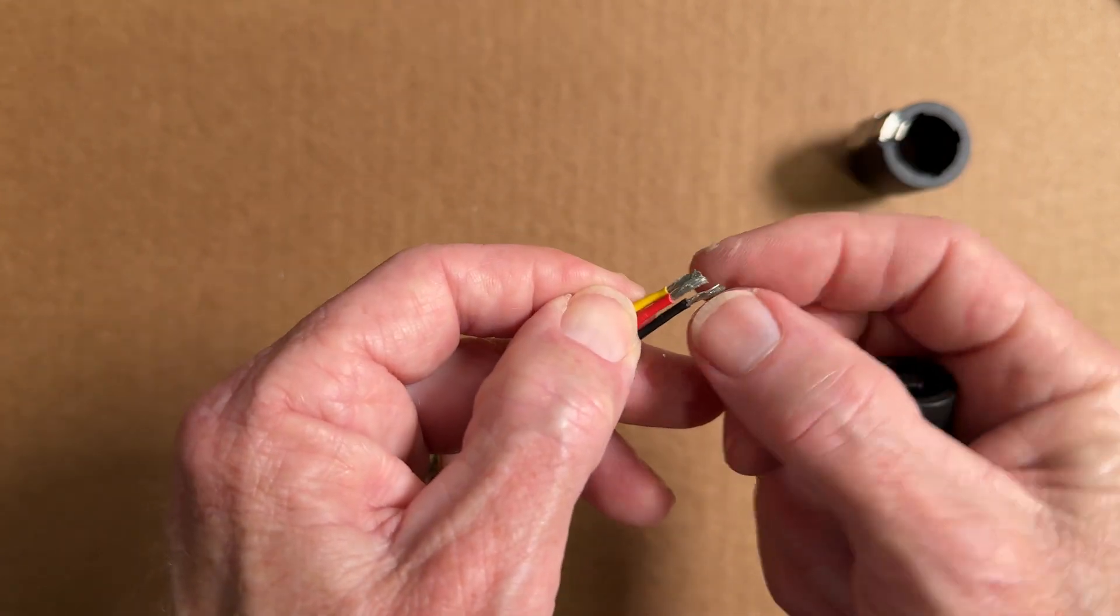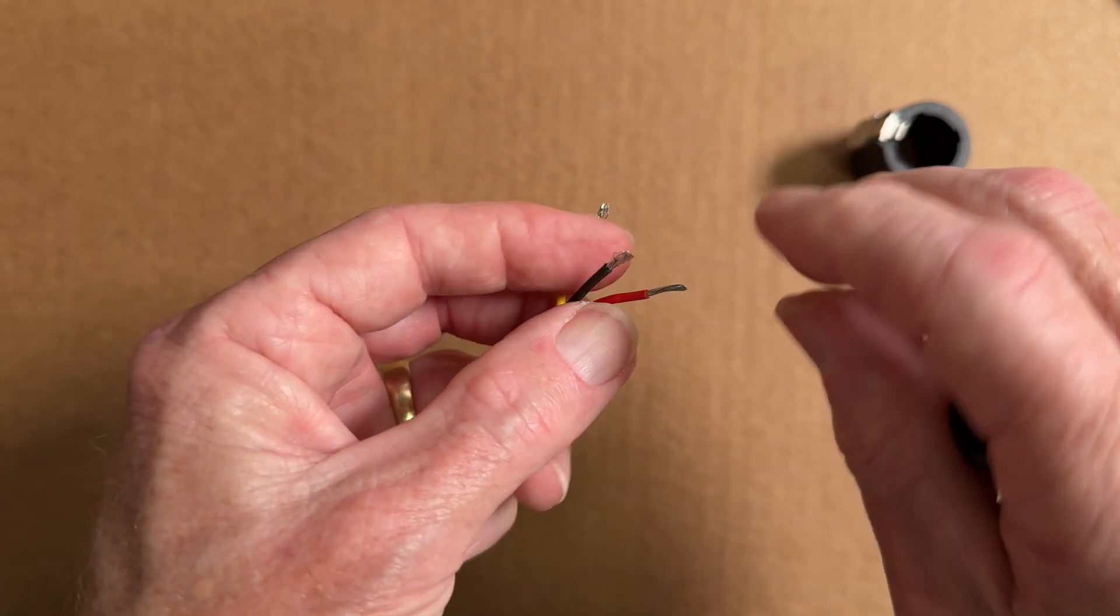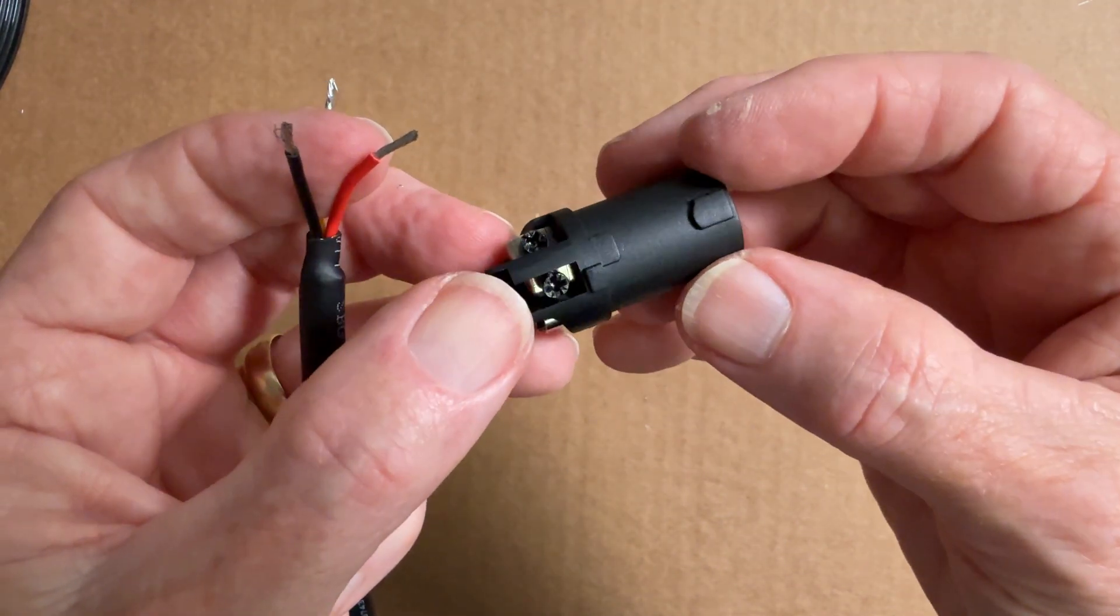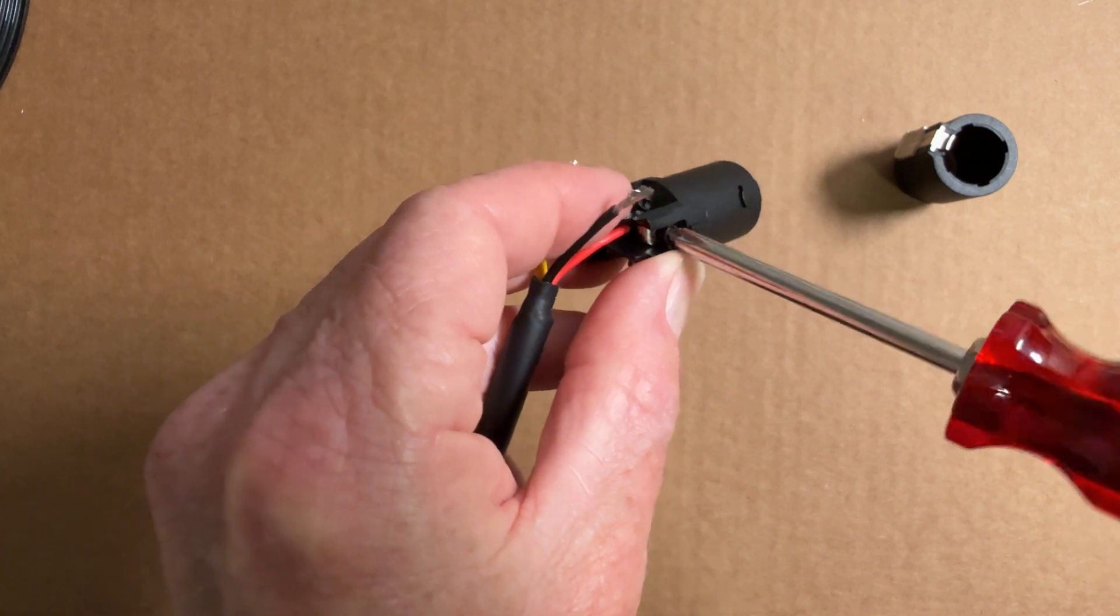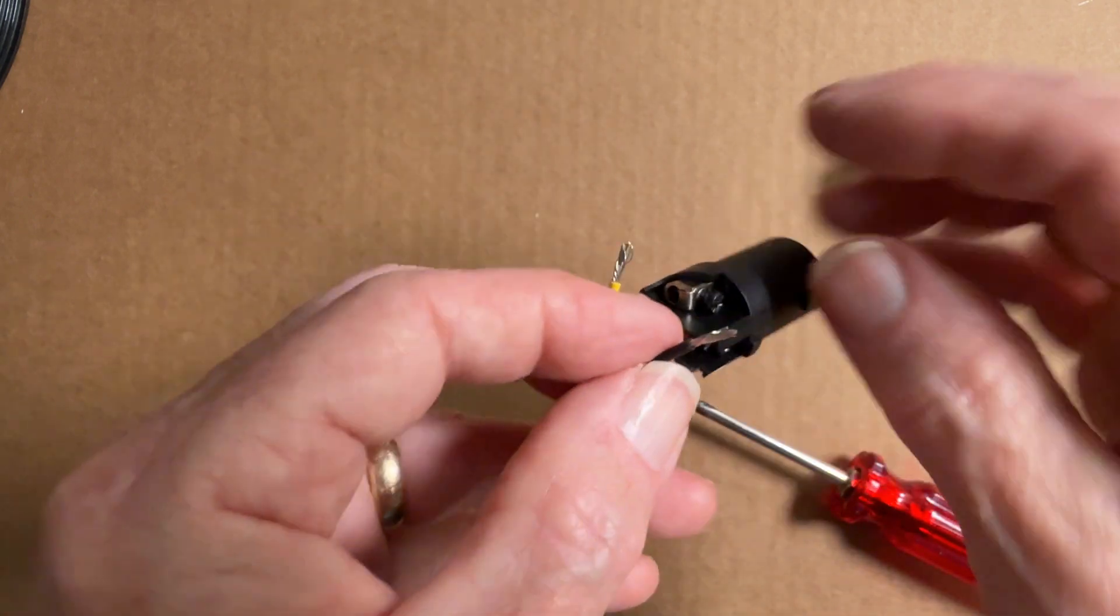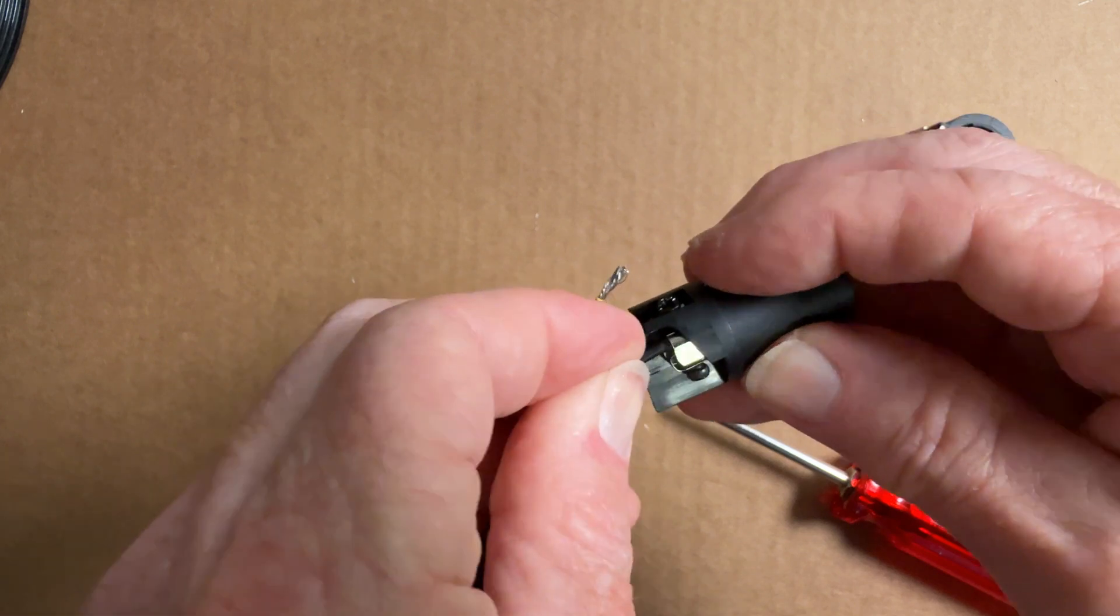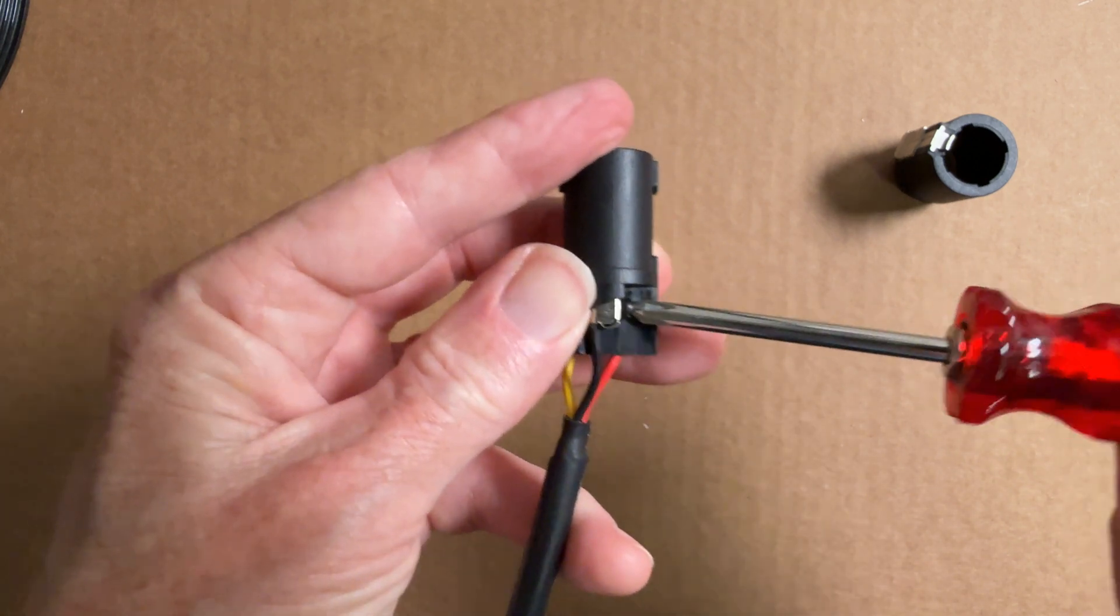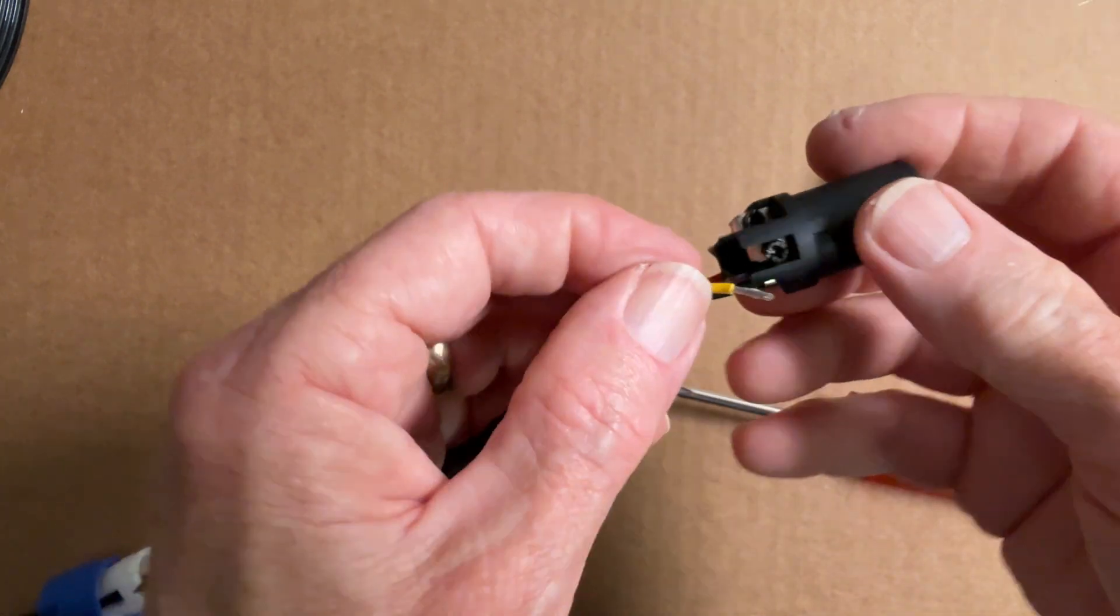We're going to put the red wire into that hole and tighten the screw up. There we go. To the left of where we hooked up the red wire, we're going to hook up the black wire. Just push it into that hole and tighten the screw.